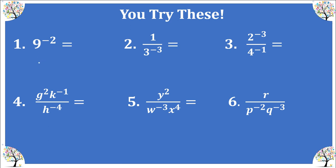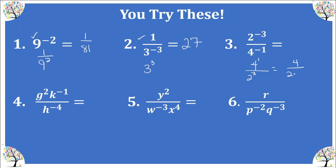Pause the video and try these. Number 1: 9 to the negative 2 moves to the bottom, giving 1 over 81. Number 2: flip 3 to the negative 3 from the denominator to the numerator, making it positive — 3 times 3 times 3 gives positive 27. Note that 9 and one third are positive bases, so answers should be positive — we're just dealing with negative exponents. Number 3: flip 2 to the negative 3 to the bottom and flip 4 to the negative 1 to the top. We get 4 over 8, which simplifies to one half.